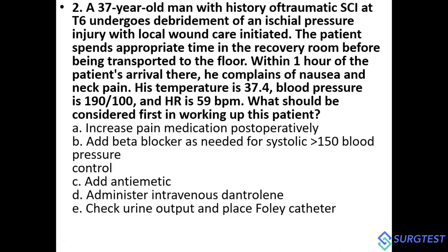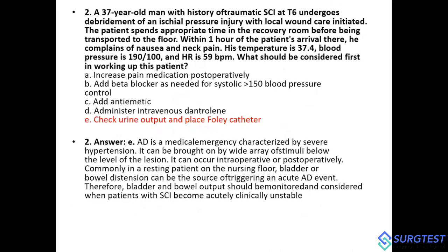Question 2: A 37-year-old male with traumatic spinal cord injury at C6 level undergoes debridement for a sacral pressure injury. Within one hour of arrival he develops nausea, neck pain, slight fever, blood pressure 190/100, and low heart rate — this picture corresponds to autonomic dysreflexia. The first step in management is to check urine output and insert a Foley catheter, as bladder outlet obstruction is a common precipitating cause and must be relieved to prevent clinical instability.